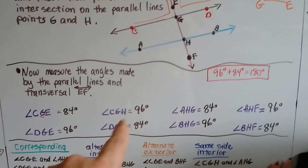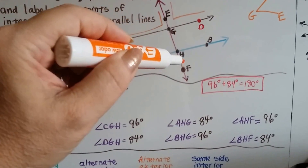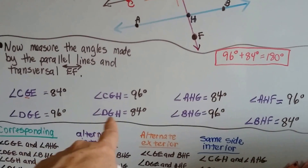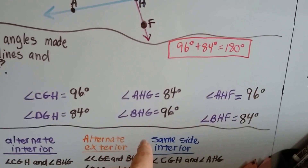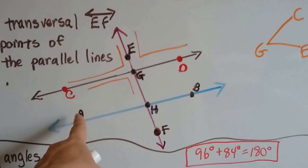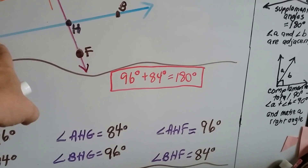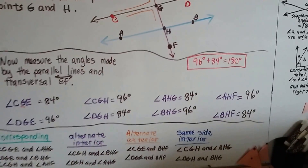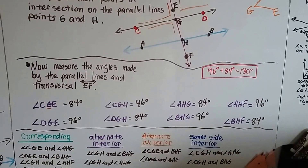So angle CGH is 96 and DGH is 84. CGH would be right here, and DGH is going to be this one. On this side of the CD line we have 180 degrees. AHG and BHG — that's 84 and 96 — are right here and right here. And then AHF and BHF — that's 96 and 84. So those are the only two measurements across the entire thing with eight angles — just two different measurements.